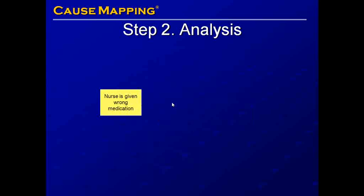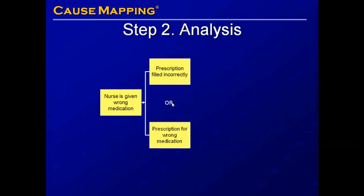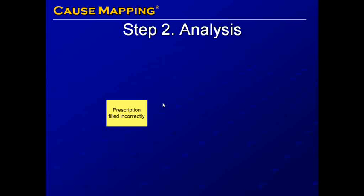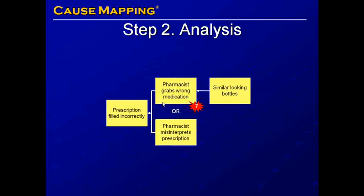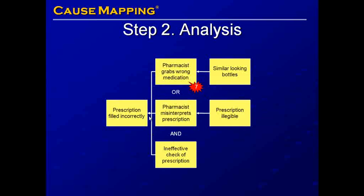The nurse may be given the wrong medication because the prescription is filled incorrectly, or the prescription may be for the wrong medication. A prescription may be filled incorrectly because a pharmacist grabs the wrong medication — an error at step 7 in the process. The pharmacist may grab the wrong medication because of similar looking bottles, or may misinterpret the prescription received from the physician because the prescription is illegible. There must also be an ineffective check of the prescription — we know it was ineffective if it results in the patient receiving the wrong medication.